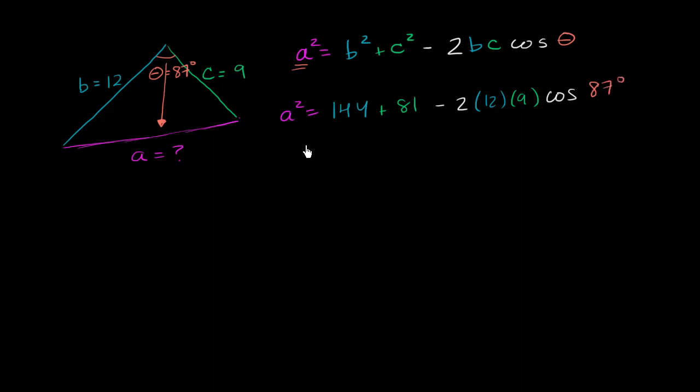And this is going to be equal to, let's see, this is 225 minus, let's see, 12 times 9 is 108. 108 times 2 is 216, so 225 minus 216 times the cosine of 87 degrees.